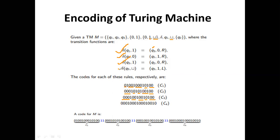For the last transition function delta(q3, blank) = (q3, 1, Left): q3 is 000; blank is 000; q3 is 000; 1 is 00; and Left is 0. All the codes are separated by pairs of 1s. That is the encoding of Turing machines.